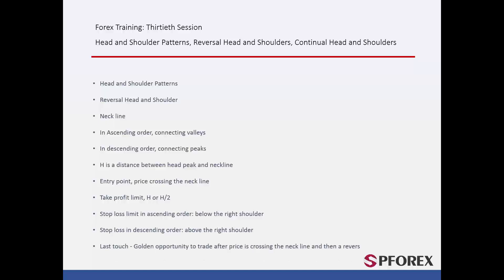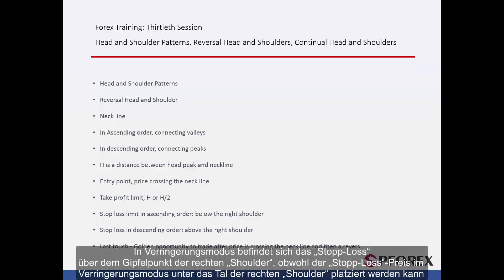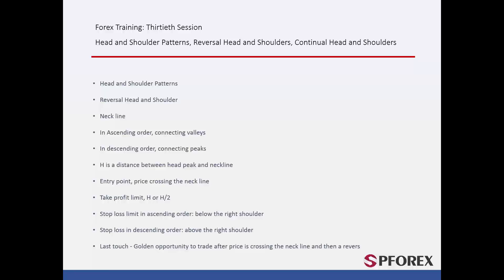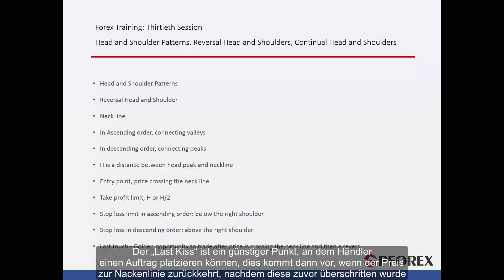Stop loss. In decreasing mode, stop loss is above a right shoulder peak point, while in increasing mode, stop loss price can be placed under a right shoulder valley. Last kiss is a favourable point where traders can place an order. It happens when price returns to the neckline after it crossed it earlier.